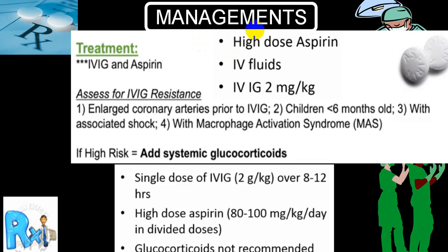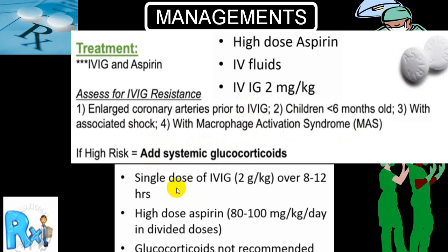As far as management is concerned: high-dose aspirin, IV fluids, and IV immunoglobulins are the mainstay. Immunoglobulin and aspirin become the prime treatment to reduce inflammation. If there is resistance — particularly if there is coronary artery involvement, if the child is less than six months old, there is associated shock, macrophage activation syndrome, or high risk — then you can add systemic glucocorticoids and repeat IV immunoglobulins. A single dose of IV immunoglobulin is 2 grams per kilogram over 8 to 12 hours. High-dose aspirin is 80 to 100 mg/kg/day in divided doses.